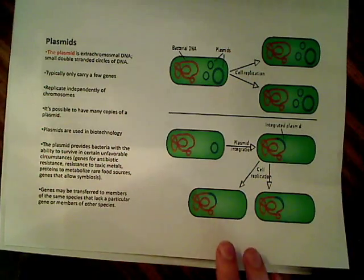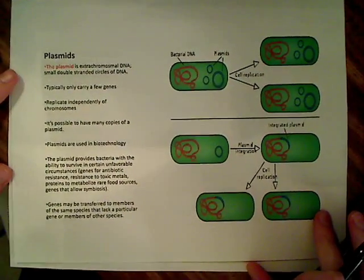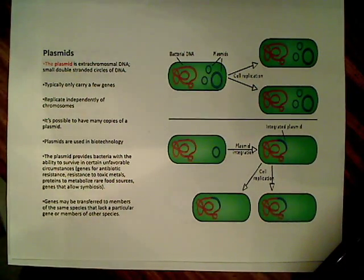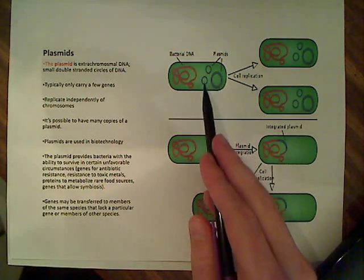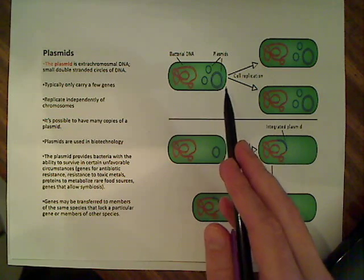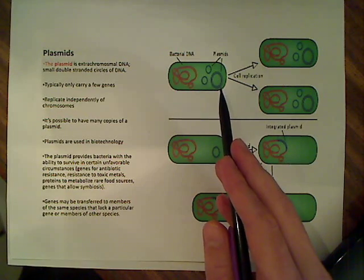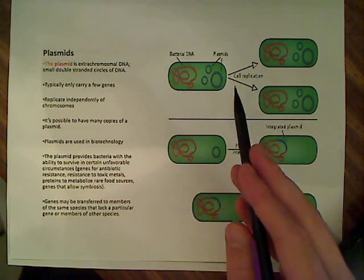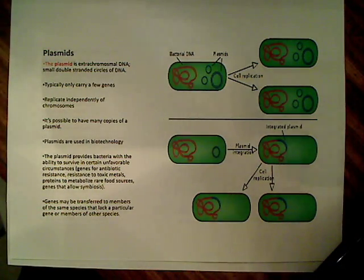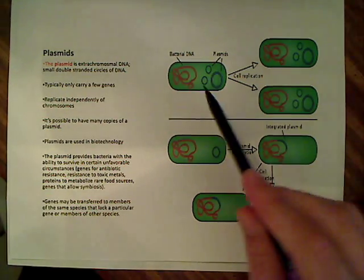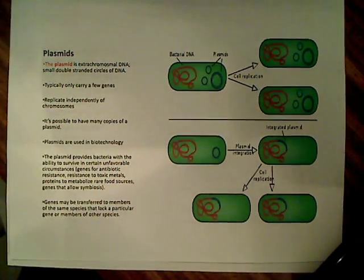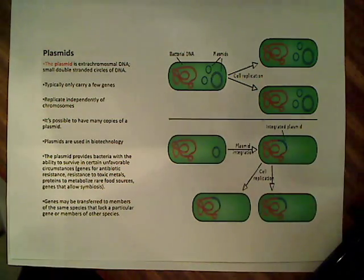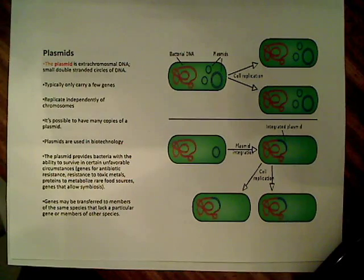Now discussing plasmids: a plasmid is extrachromosomal DNA, and it's usually a small double-stranded circle of DNA, as shown in the diagram. Plasmids typically carry only a few genes, and those genes are usually non-essential — things not required for the absolute survival of the cell. They replicate independently of the chromosome, and it's possible to have many copies. You can have a low copy number — like three plasmids — or a high copy number, upwards of 50 in a single cell.